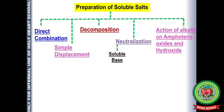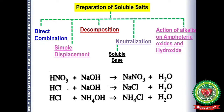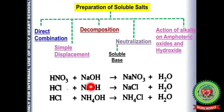The next method is neutralization, divided into two parts. The first is neutralization with a soluble base: acid + soluble base → salt + water. For example, nitric acid + NaOH → sodium nitrate + water; HCl + NaOH → sodium chloride + water. If the acid changes, the anion of the salt changes. When ammonium hydroxide reacts with HCl, ammonium chloride and water are formed.